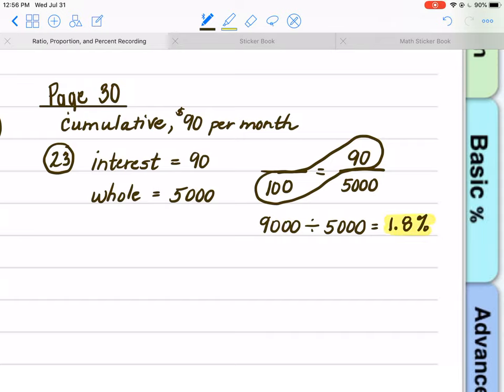Just be careful when you go to choose an answer. Because B is 1.8 monthly, and C is 1.8 yearly. Well, remember, your interest is $90 per month. So this is 1.8 monthly, and that will be answer B.